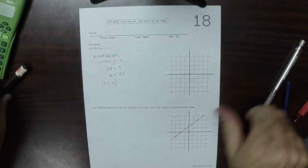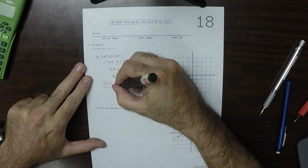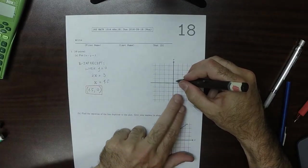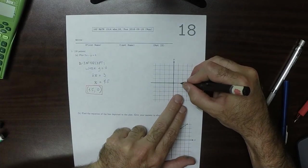So I'll plot it in red. So at x is 1.5 and y is 0. So that's here.